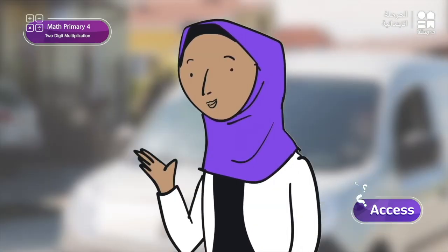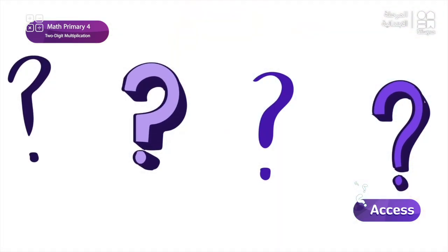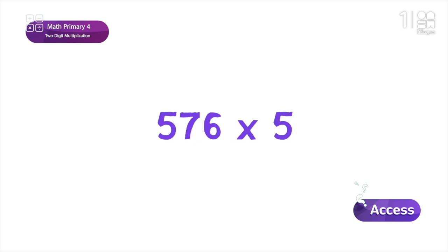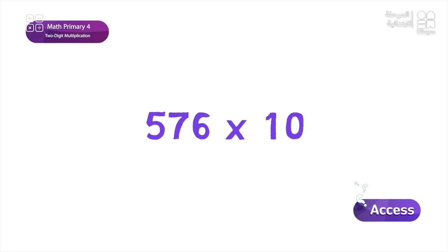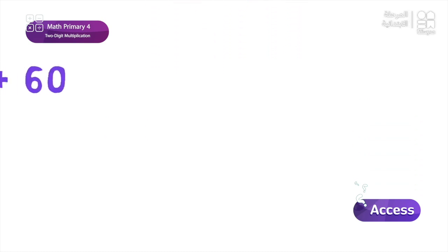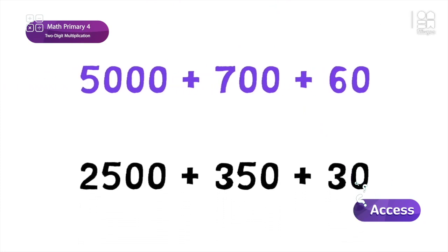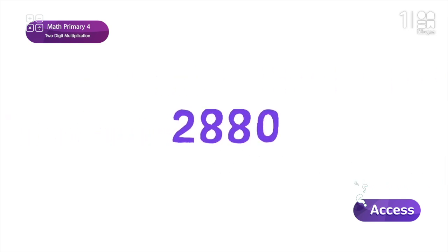Can you work out how many vans pass the school in a school day? We have 5 hours of lessons in a day, so we have to multiply 576 by 5. Why don't you multiply 576 by 10? 5 is half of 10, so we just halve the answer to 576 times 10. Let's add 2,500, 350, and 30. That's 2,880.